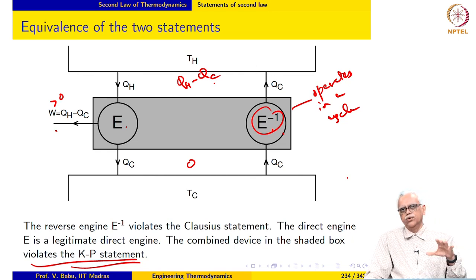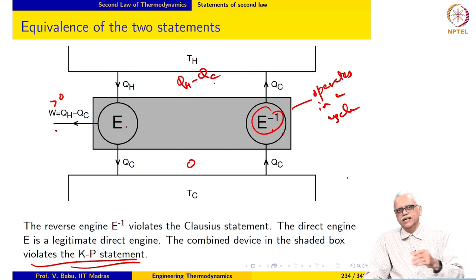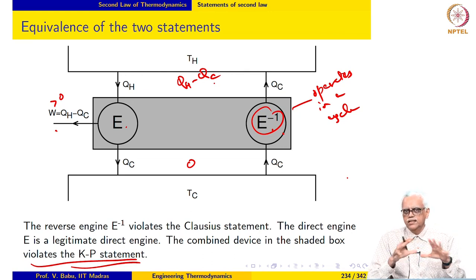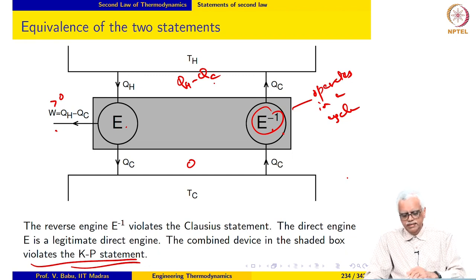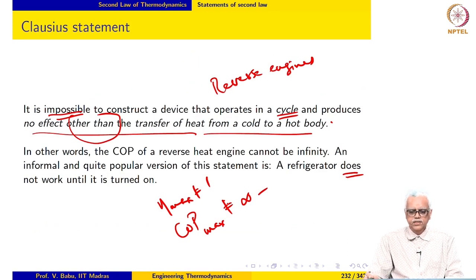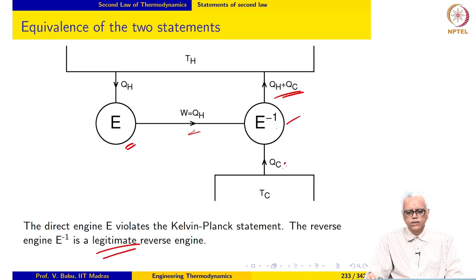So if you give me a device that violates the Clausius statement, I can use it to construct a device that violates the Kelvin-Planck statement, and vice versa. This shows we will not end up in a situation where a device violates one but not the other. If it violates one, it violates the other. This establishes the equivalence of the two statements. We only need to be concerned about devices that violate one of the statements — the equivalence is established in this manner.